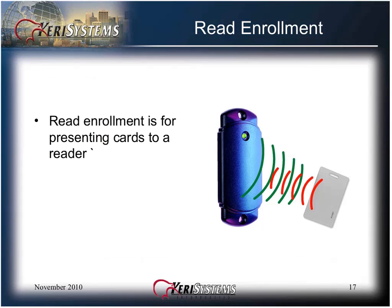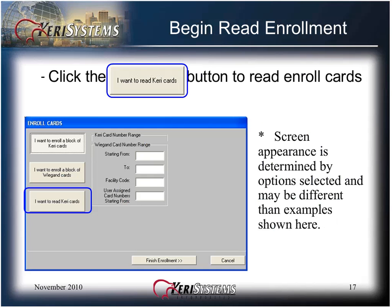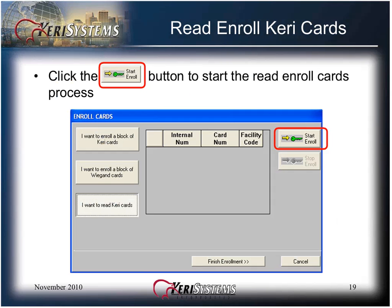Read Enrollment is used for presenting cards to a reader. Cards can be in random numeric order. Use Read Enrollment if you do not know the facility code or the numbers are not visible on the credential. To begin Read Enrollment, click the I Want to Read Carry Cards button to read enroll cards. The screen appearance is determined by the options selected and may be different than the example shown here. The Enrollment Wizard will guide you through enrolling credentials. Read Enrollment is also referred to as Learn Enrollment. Click the Start Enroll button to start the Read Enroll Cards process.